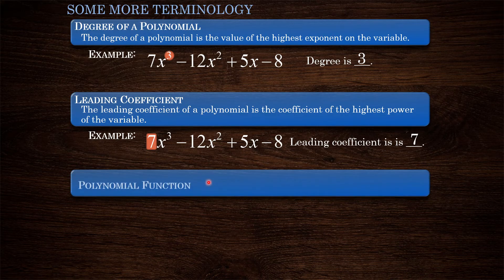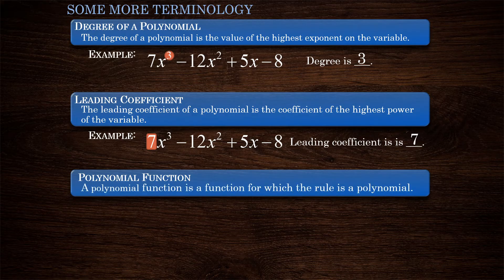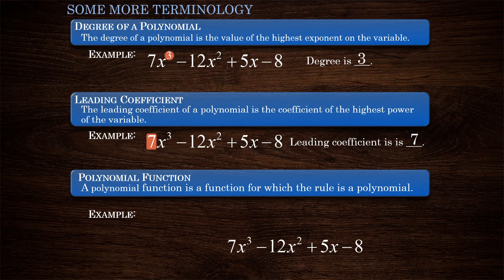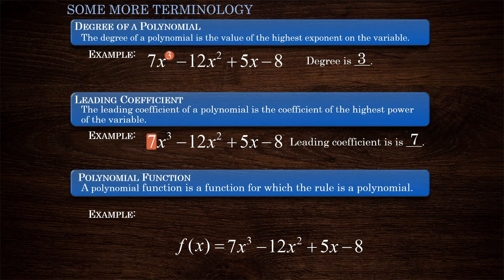One more piece of terminology: a polynomial function. A polynomial function is a function for which the rule is a polynomial. That is, if we have, for example, a polynomial expression — 7x cubed minus 12x squared plus 5x minus 8 — and that is the rule for our function, then that function is called a polynomial function. So if we had f(x) equals 7x cubed minus 12x squared plus 5x minus 8, that is a polynomial function. The rule here — this polynomial expression — is the rule for our function, which makes it a polynomial function.